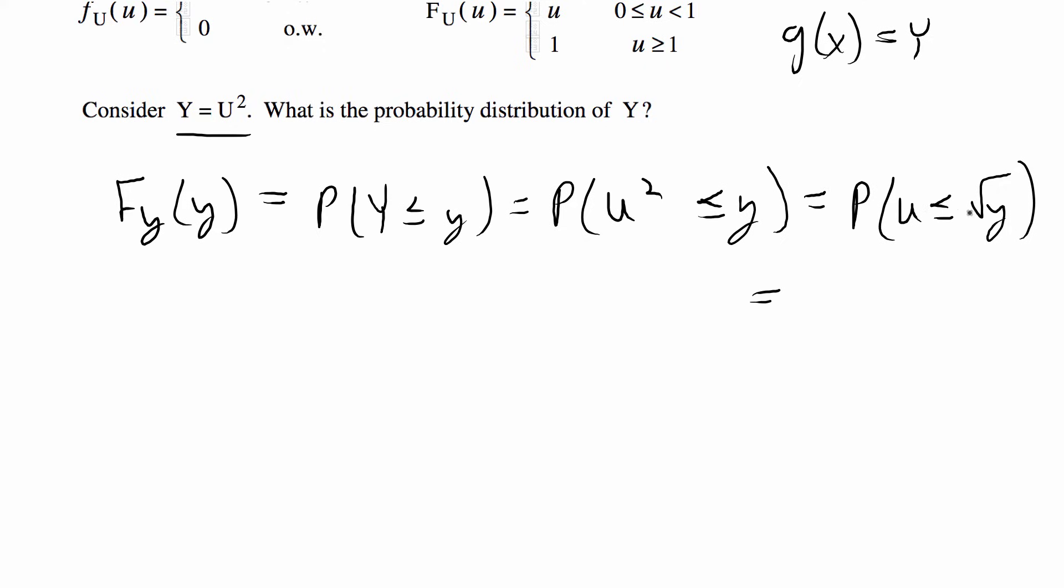Now that we have U is less than or equal to some value this probability is the same as the CDF of X when you have X equal to the square root of y and in this case our X is U.